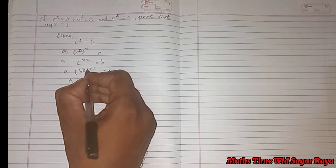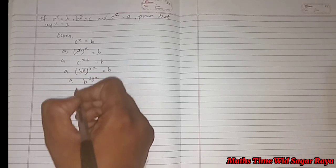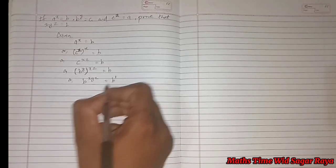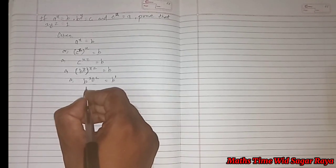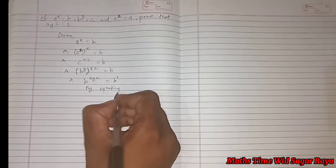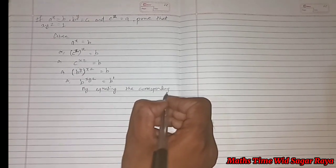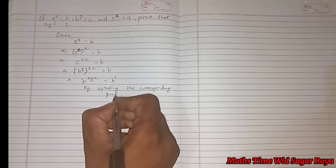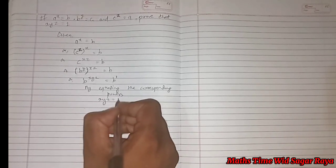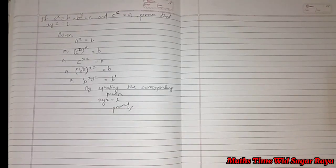So here we can write b means b power 1. Now by equating the corresponding powers, we can write xyz is equal to 1. Proved.